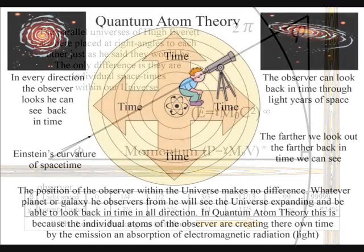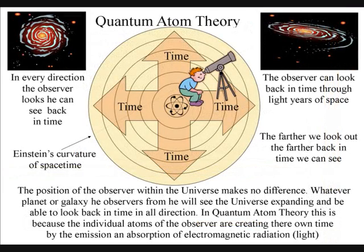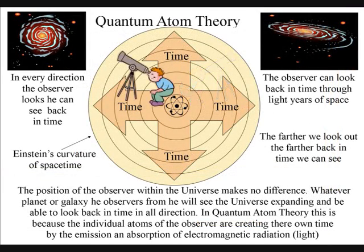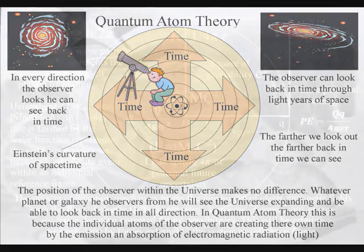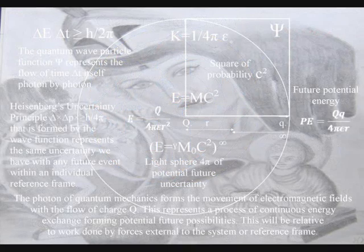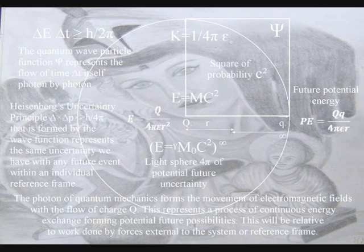Therefore an observer can look back in time at the beauty of the stars in all directions from the center of their own reference frame. This is because they are forming their own space-time by collapsing the waves of light into new photon oscillations, forming their own future potential.